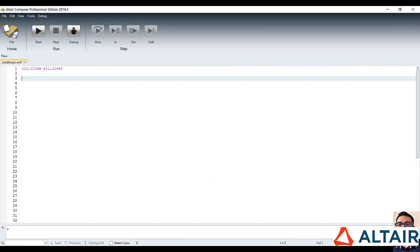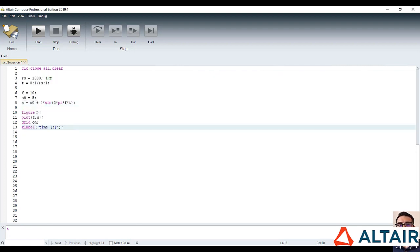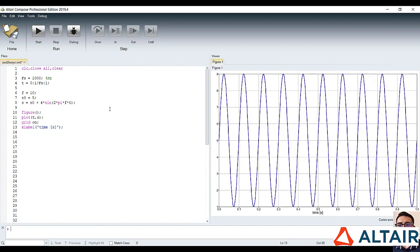First of all, let's define the sampling frequency and the time array. Now, let's define the signal as the sum of a bias and a cosine wave.